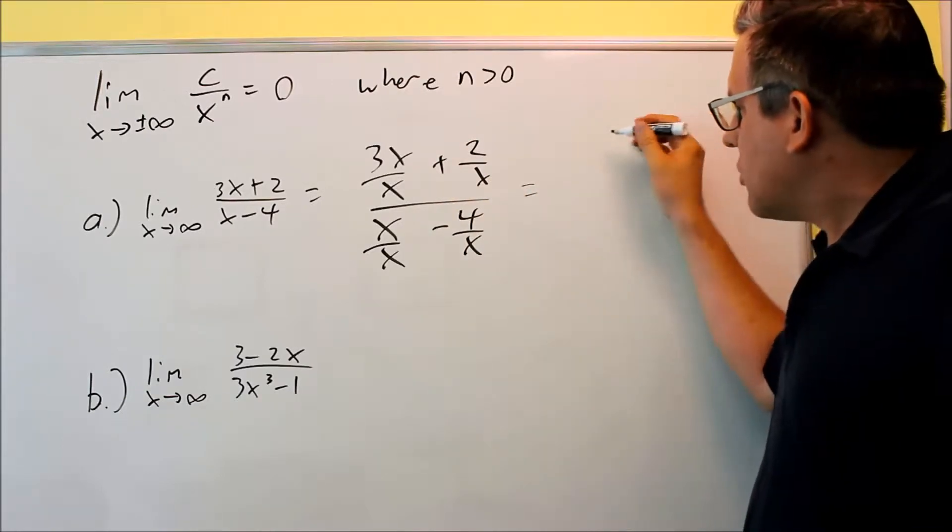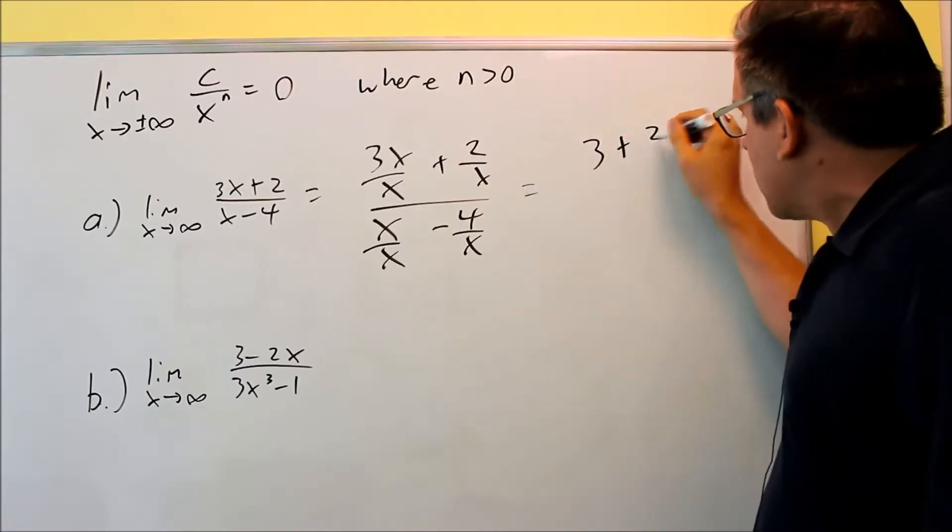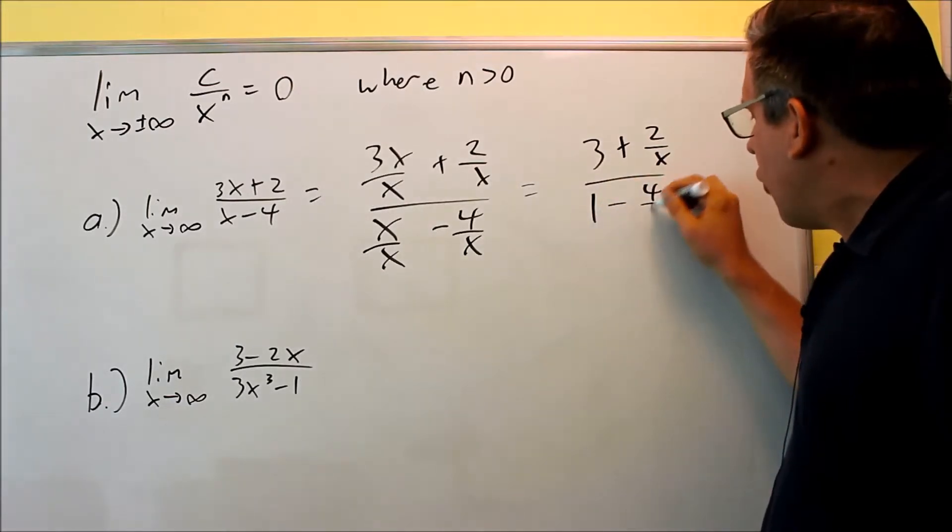Now, doing so, we're going to be able to get some cancellations here. X is canceled. You get 3 plus 2 over X, and on here you get 1 minus 4 over X.